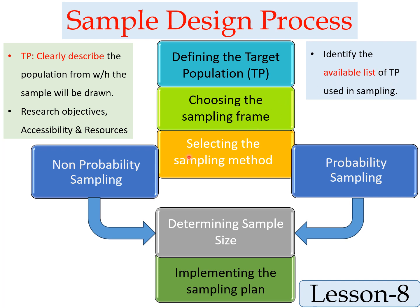After choosing the sampling frame, the next step is selecting the suitable sampling method based on different factors such as the research objectives and the nature of the population. To get reliable findings, we have to choose a suitable sampling method — either non-probability sampling or probability sampling. These are the two major divisions, each with sub-methods.